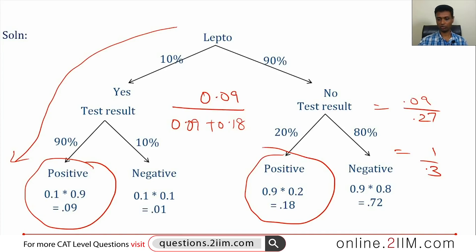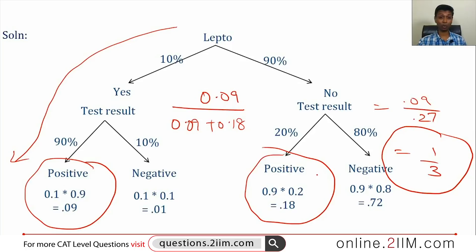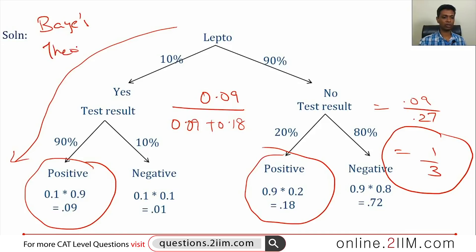This is why pharmacists, psychologists, psychiatrists, and doctors are asked to study probability and statistics — because this kind of number is very important in real life. As a doctor, you see the result, and if the test says you have lepto, there should be more than a 95% chance that you actually have lepto; otherwise the risk of giving wrong medication is very high. This is a wonderful question based on Bayes' theorem. If you understand this question, you are ready for Bayes' theorem in a competitive exam — your exam question will not go further than this.